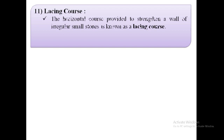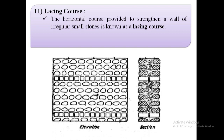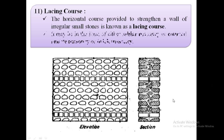The next term is lacing course. The horizontal course provided to strengthen a wall of irregular small stones is known as a lacing course. As shown in the image, these are the lacing courses. It may be in the form of either ashlar masonry, coarse rubble masonry, or brick masonry.